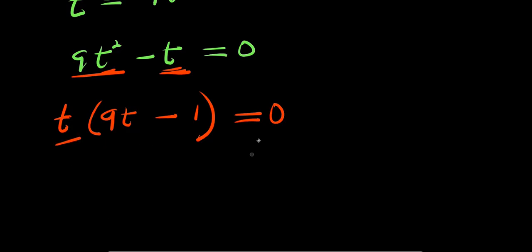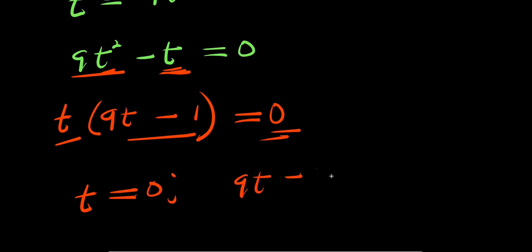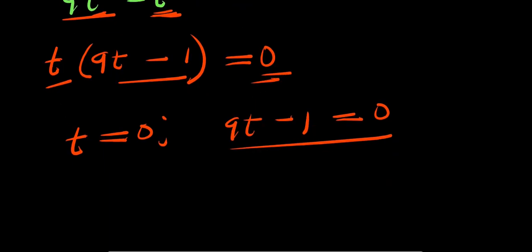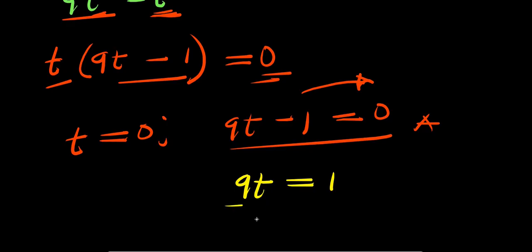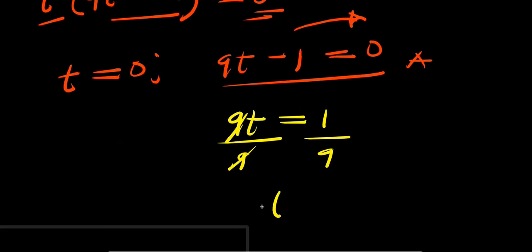From here we equate each factor to zero. We have t equals 0 — that is one solution. And 9t minus 1 equals 0 — that is another solution. Solving the second one: 9t equals 1, then dividing both sides by 9, we get t equals 1 over 9.